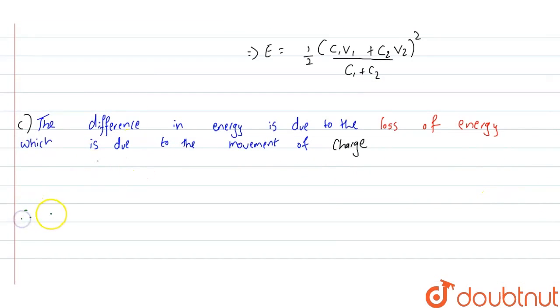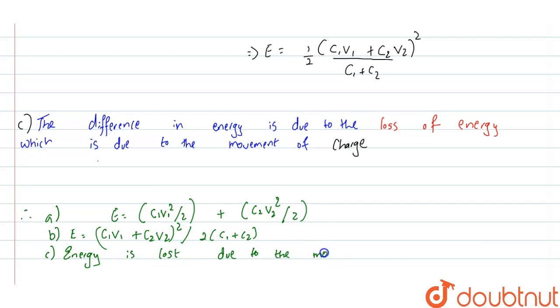Therefore, for part A, our total energy is given by E equals C1 V1 squared by 2 plus C2 V2 squared by 2. For part B, our energy is given by C1 V1 plus C2 V2, this whole squared, divided by 2 times C1 plus C2. And part C: energy is lost due to movement of charge.